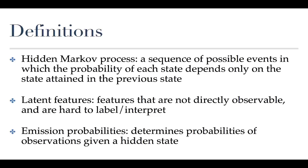From last class we talked about transition probabilities — those are the likelihoods of moving from one state to another. Emission probabilities are the probabilities for the observations you would expect to find within a given hidden state. So emission probabilities represent how your latent features impact which states you move between.